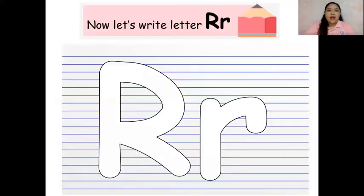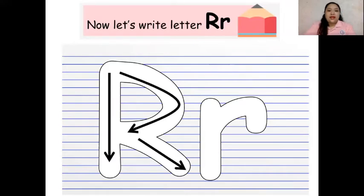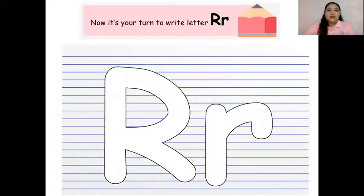How do we write letter R? Let's start with the mommy R: line down, half circle, slant down. For the baby R: line down, hook. Now it's your turn to write letter R. For the mommy R: line down, half circle, slant down. For the baby R: line down, hook.